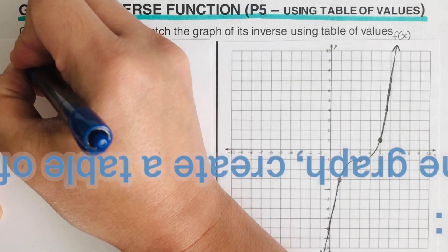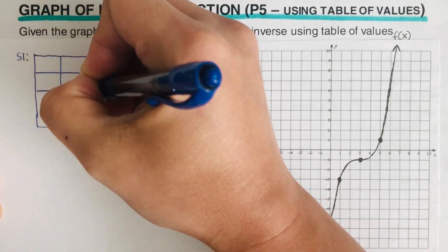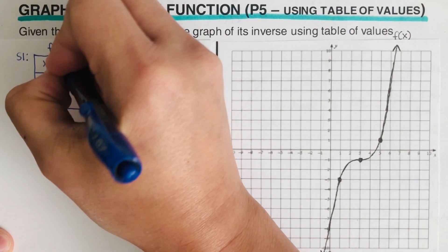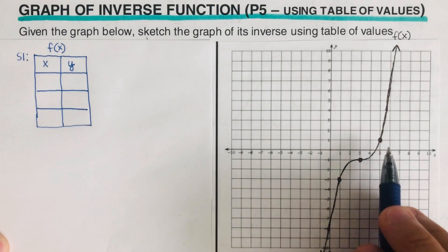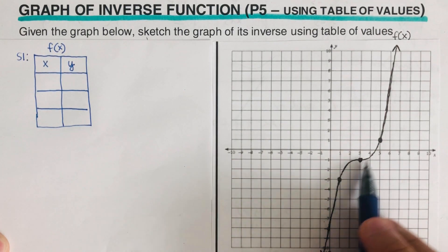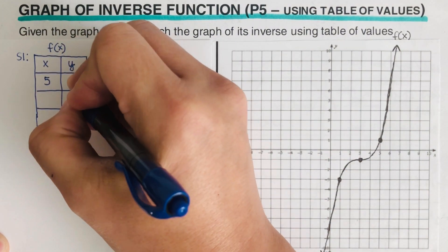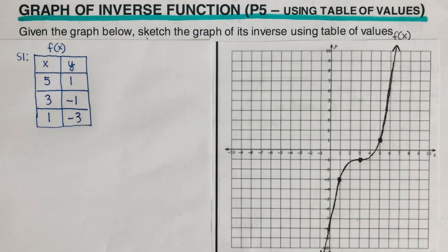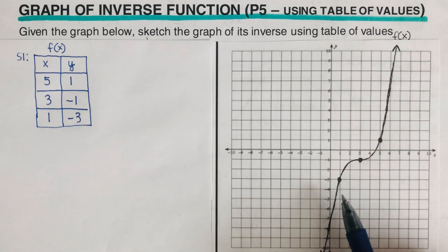I'm going to label this as Step 1. This table of values is for f of x, which is this function right here. To determine the numbers we put in, you can start anywhere, but let's start with this point here — that would be (5, 1). I'll write five and one and do the rest of them. So that's the first step: I determine the coordinates of each of these dots.